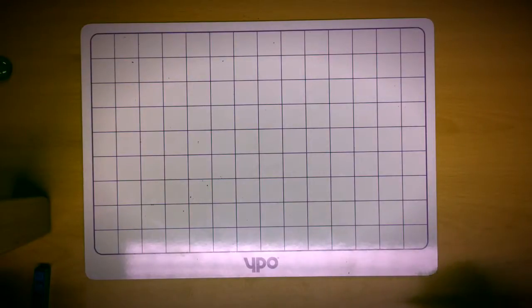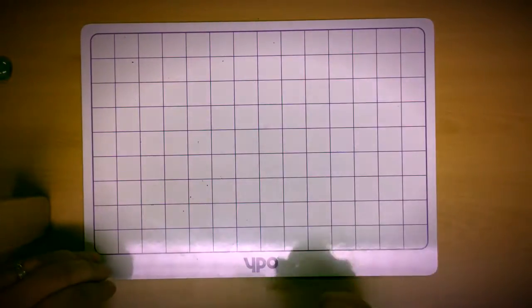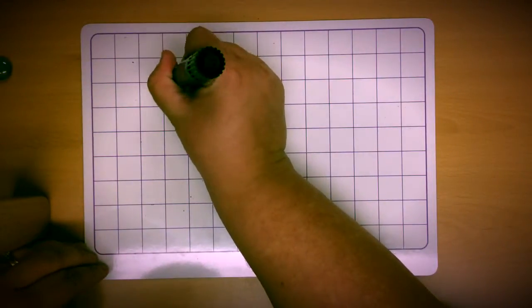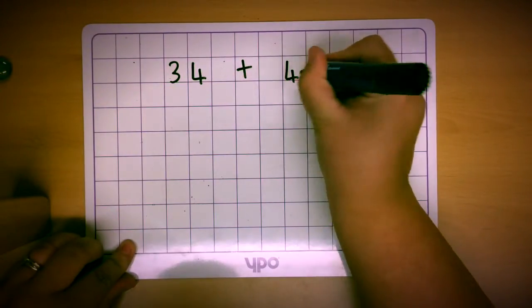To show you how this works with the children look at the following question. We're going to practice adding together 34 add 48.